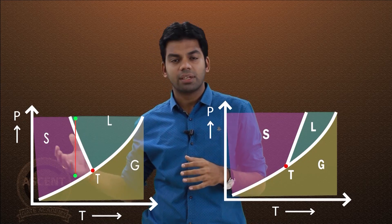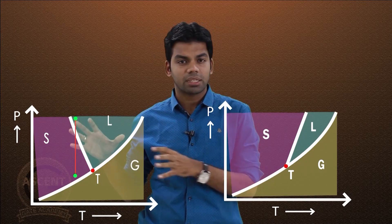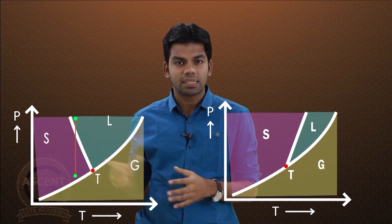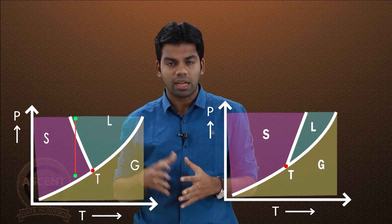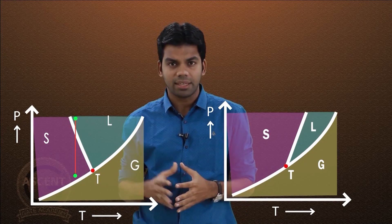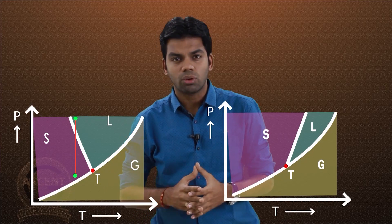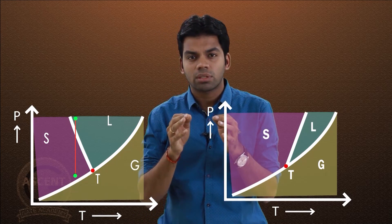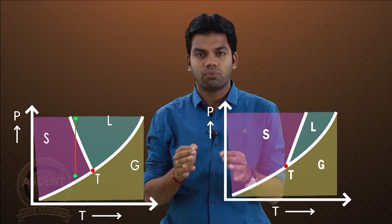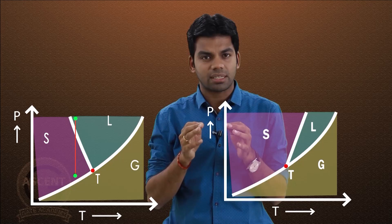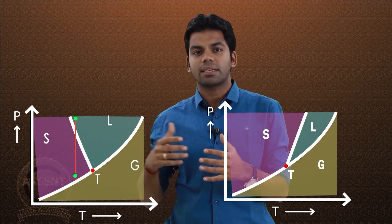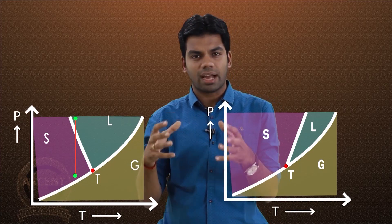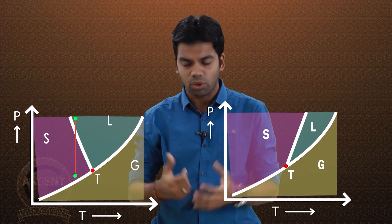To summarize: the negative slope of the melting curve for water means that compressing ice converts it to liquid. This implies the density of solid water (ice) is less than that of liquid water — which is why ice floats.